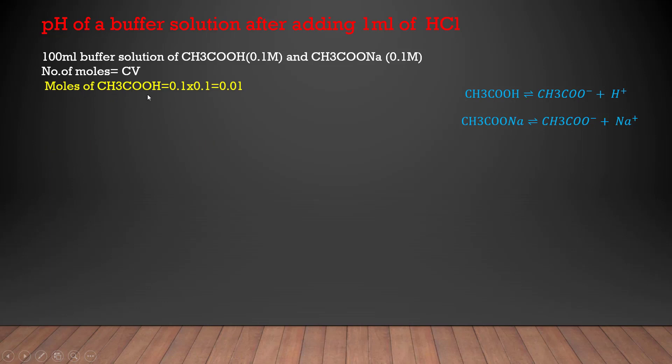Now the number of moles of acetic acid comes out to be 0.01. 0.1 is its concentration and 0.1 is its volume in liters. 100 divided by 1000 comes out to be 0.1 and these are the number of moles of acetic acid.